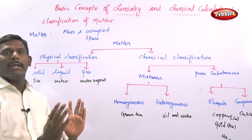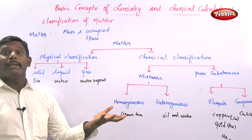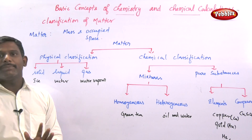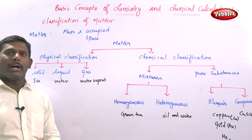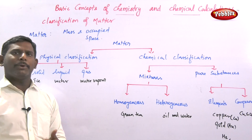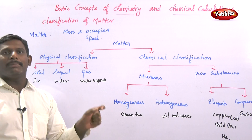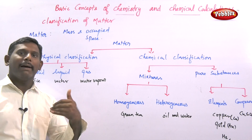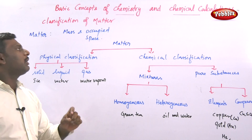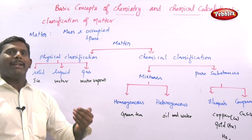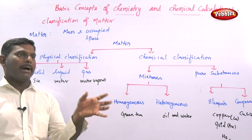For example, a table occupies space and has mass — that is the weight we find. A small table occupies a small space, a large table occupies a large space. So the object is made up of matter. Matter is anything that has mass as well as it occupies space.